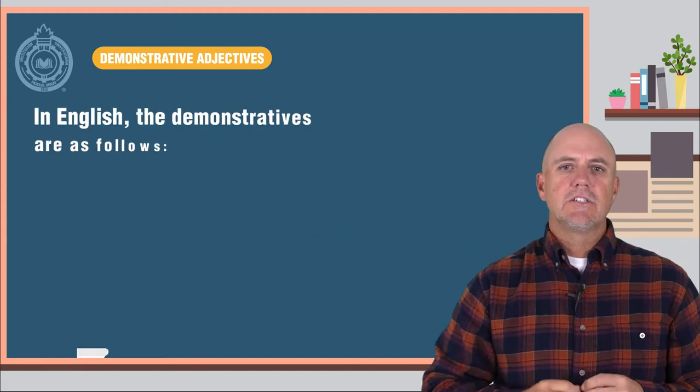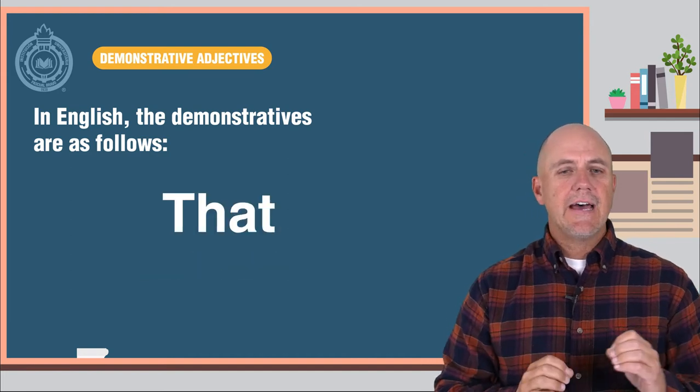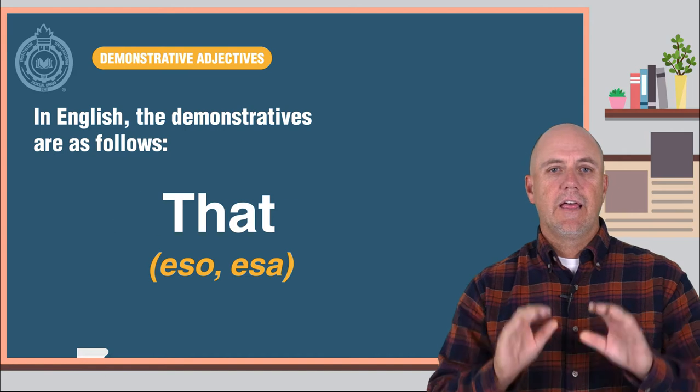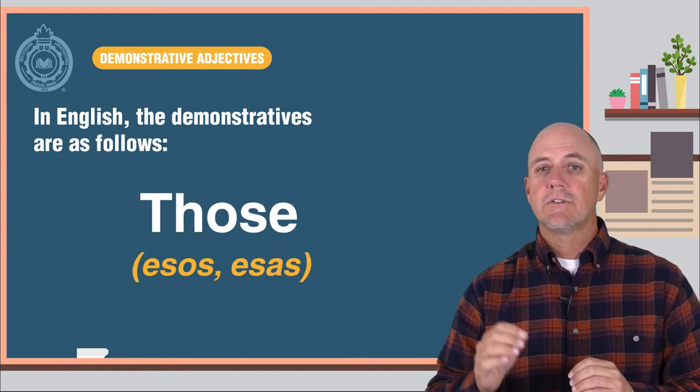In English, the demonstratives are as follows. This equals este or esta. That equals eso or esa. These equals estos or estas. And those equals esos or esas.